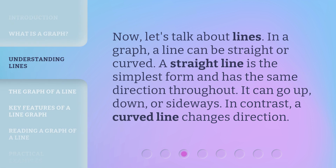Now, let's talk about lines. In a graph, a line can be straight or curved. A straight line is the simplest form and has the same direction throughout — it can go up, down, or sideways. In contrast, a curved line changes direction.